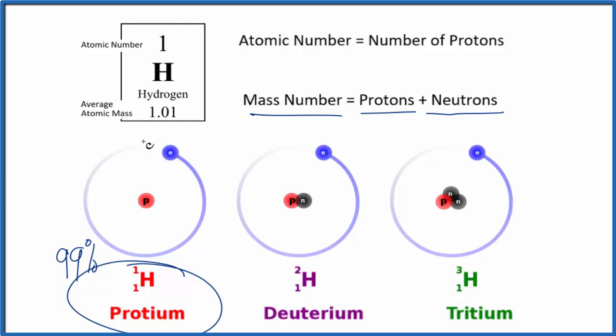So this number is really close to the mass number for protium since it's more common. We do have a little bit of deuterium and tritium, and that's what makes this number a little bit bigger than one.